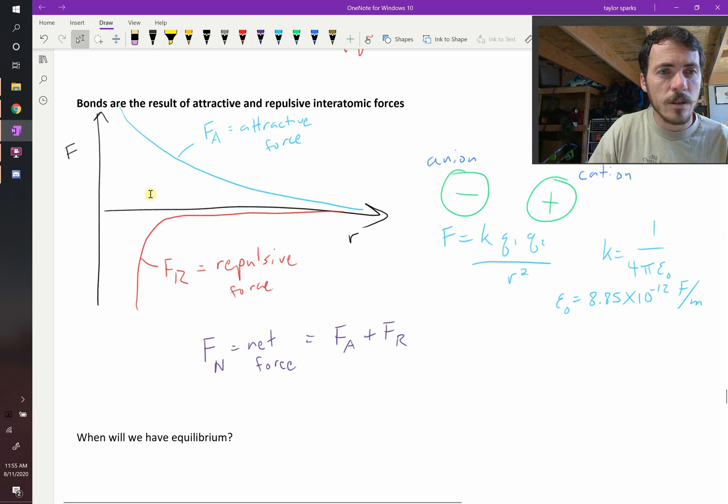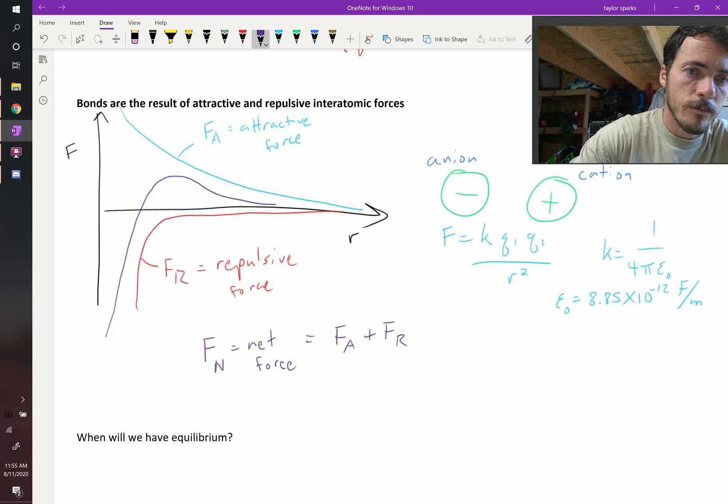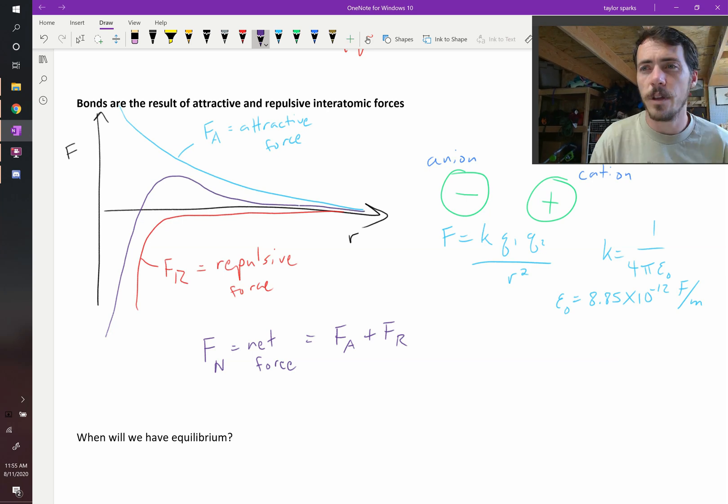What does it look like it's going to do in this plot? Well, at small values of r, F r really takes off and plummets. But at large values of r, F a is slightly larger than F r. So the net force is going to look something like this—it's going to come up, it's going to look something like that. Okay, so that's our net force.